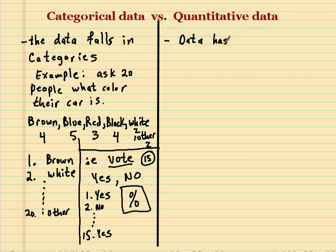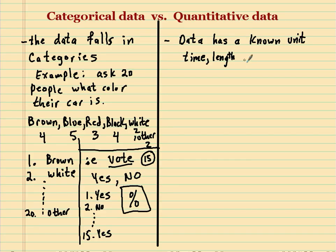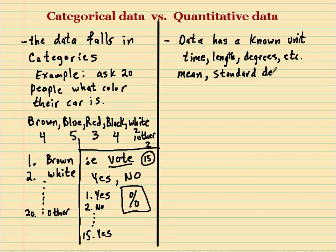Now let's look at quantitative data. Quantitative data deals with data that has a known unit — maybe it's time, maybe it's length, maybe it's degrees, and so on. What's nice about quantitative data is that we can find the mean and the standard deviation. Our data is measurable.